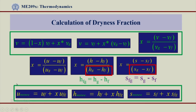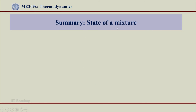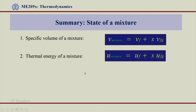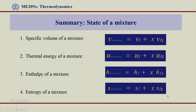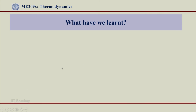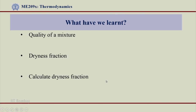If I know the dryness fraction, I can calculate all the properties of a given two-phase mixture. This is something I mentioned earlier regarding the state of the mixture — I did not know how to calculate these properties, but with this formulation and using the steam table, I will now be calculating all the properties of a given two-phase mixture. In summary, the state of a mixture can be determined by these formulations. What is important to know is the value of x; everything else can be obtained from the steam tables if I know the pressure and temperature for a given two-phase mixture.